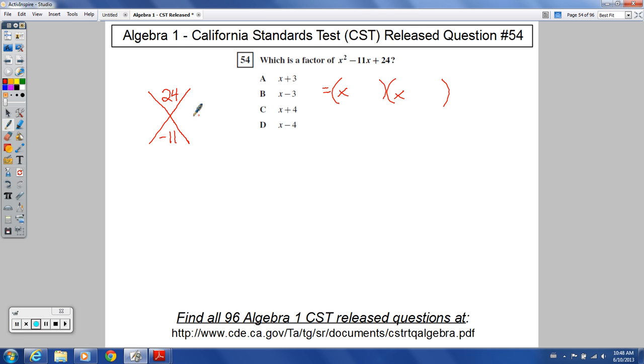So we're thinking, okay, what multiplies? Remember again that this is the product. This number is the product. This number down here is the sum of these two factors for this number. So 24, think of a bunch of different factors.